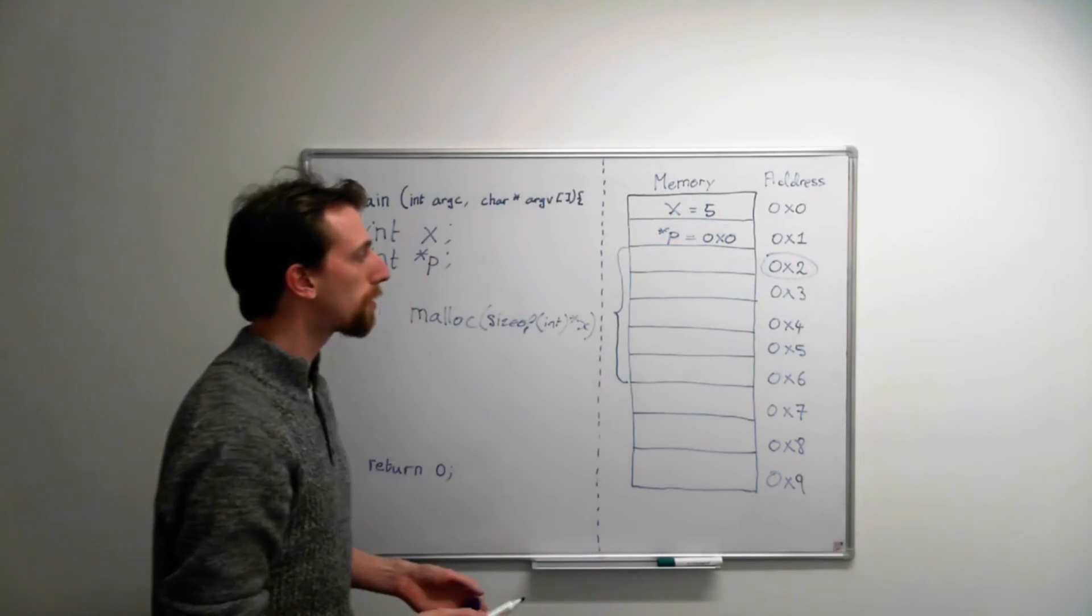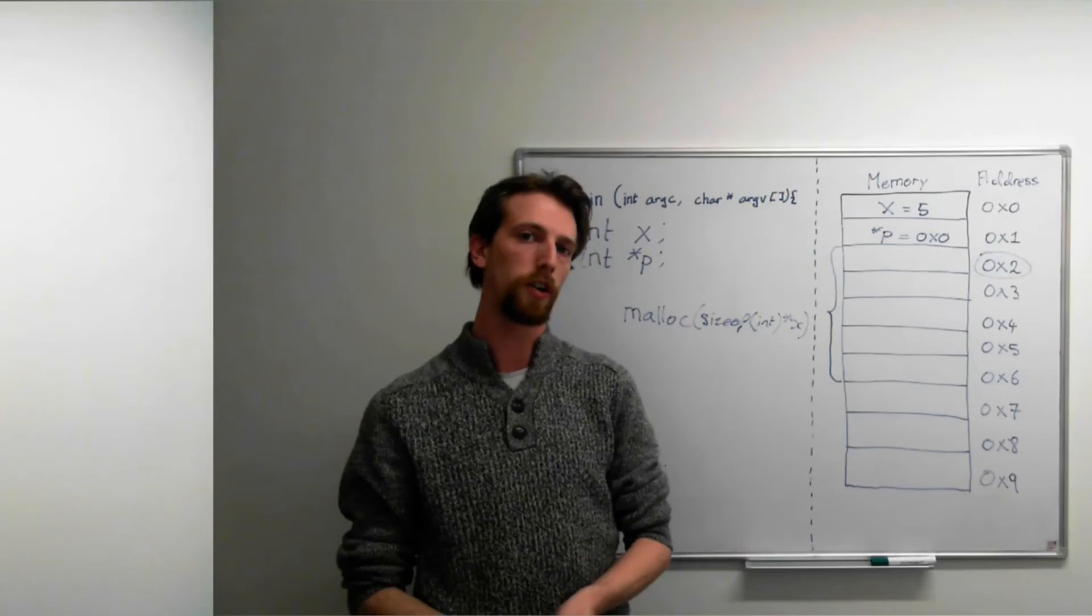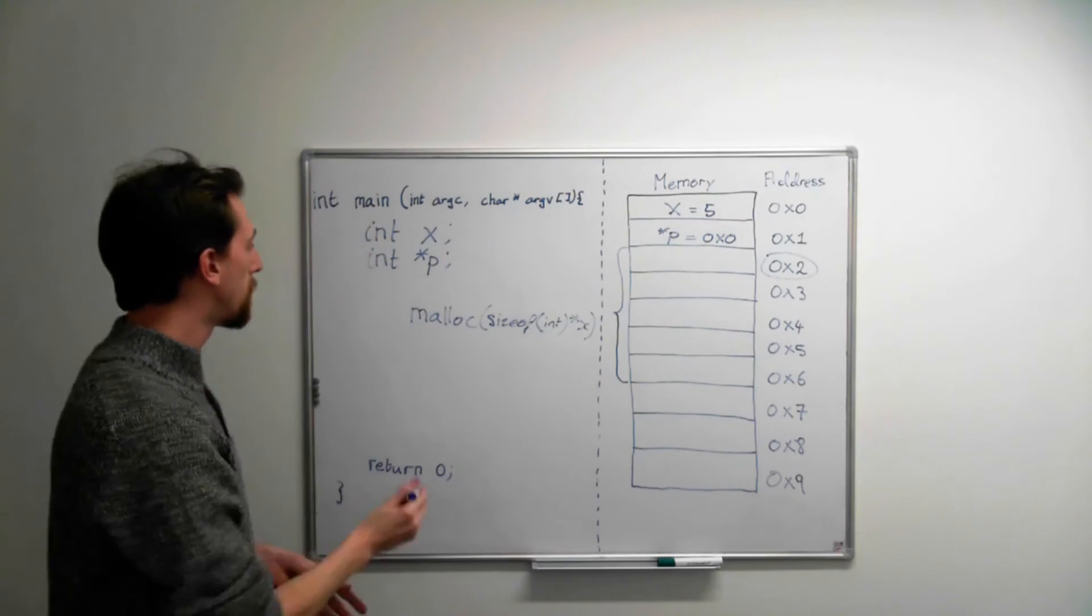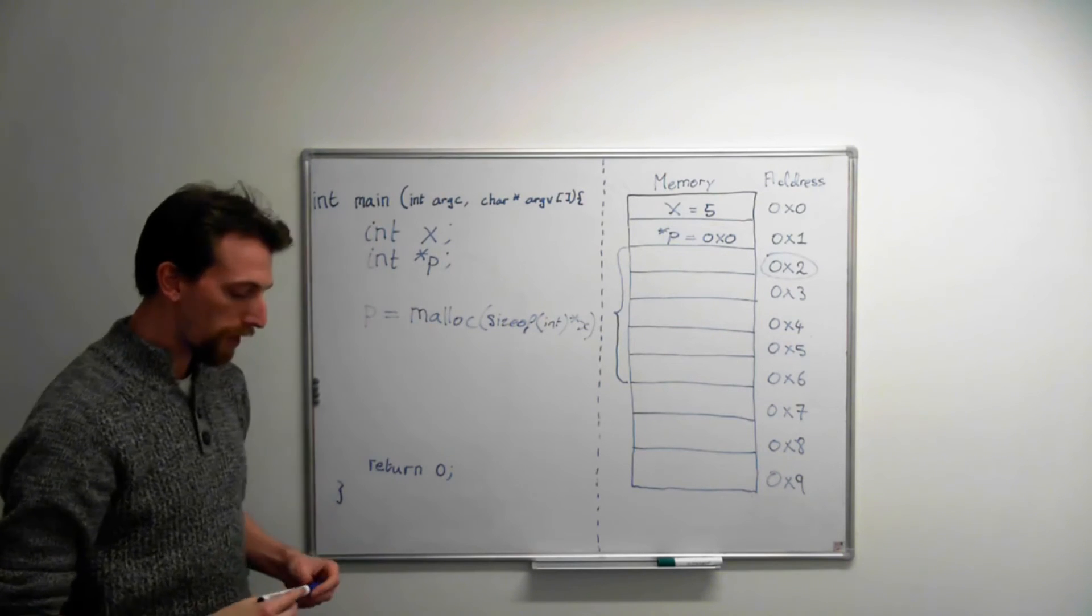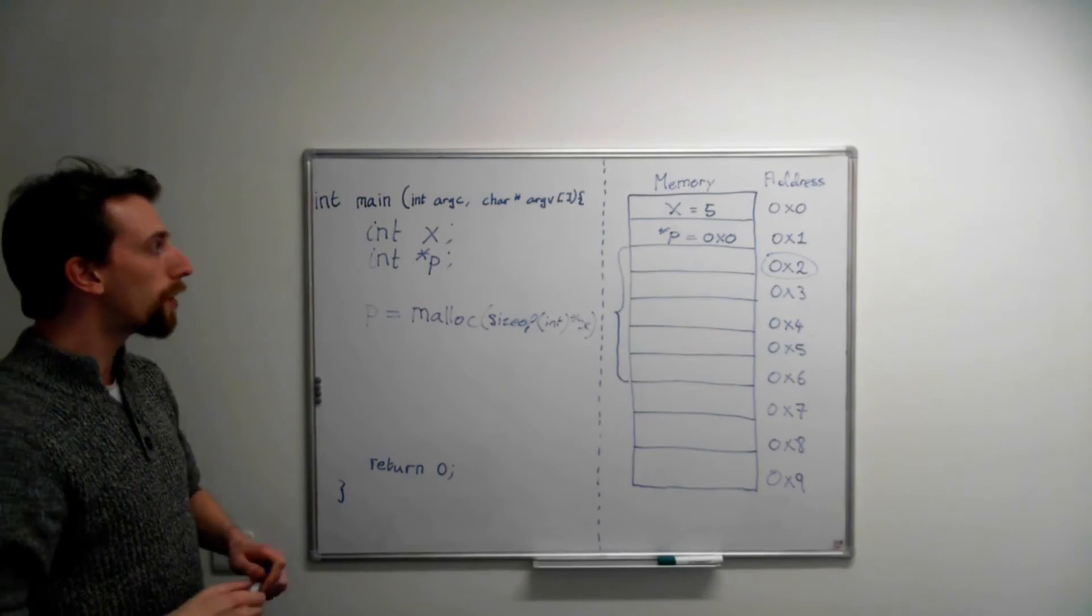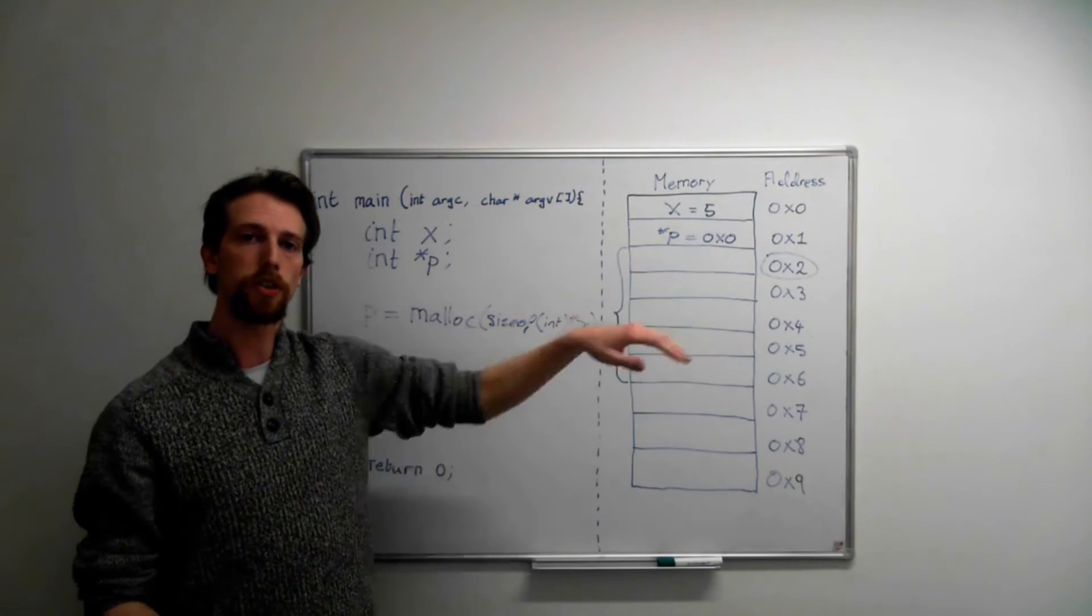So you don't get the block back, you get the address back. Malloc tells you where it found enough memory for you to use. And that's why we say p is equal to malloc. So we get a pointer. And now we can find this piece of dynamically allocated memory and we can start to do things with it.